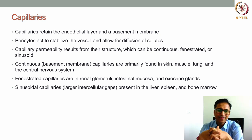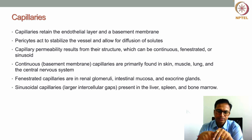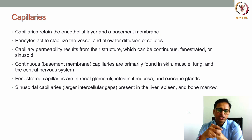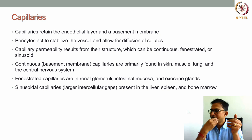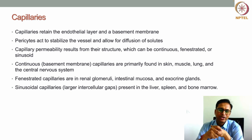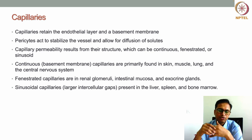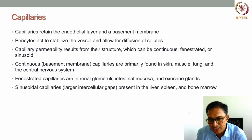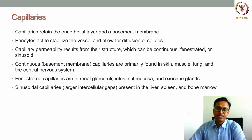Fenestrated capillaries have a non-continuous basement membrane with fenestrations, and are present in the renal glomeruli, intestinal mucosa, and exocrine glands — where diffusion is very different from continuous capillaries. Sinusoidal capillaries have larger intercellular gaps and are mostly present in the liver, spleen, and bone marrow. When targeting a particular tissue organ, you must understand what type of capillary is present so you can mimic that structure by bioprinting.